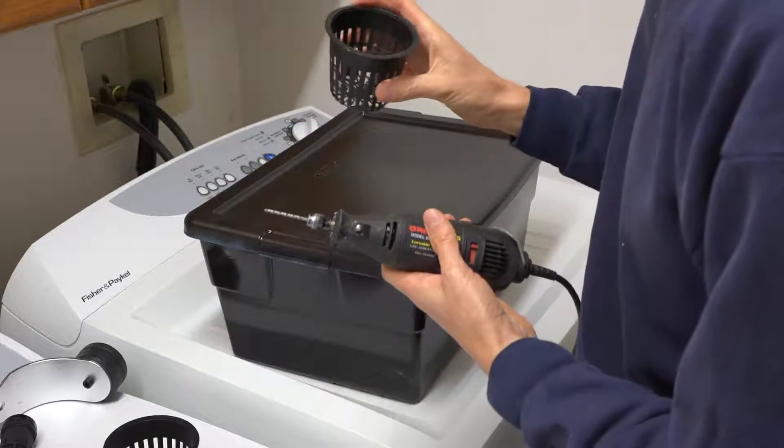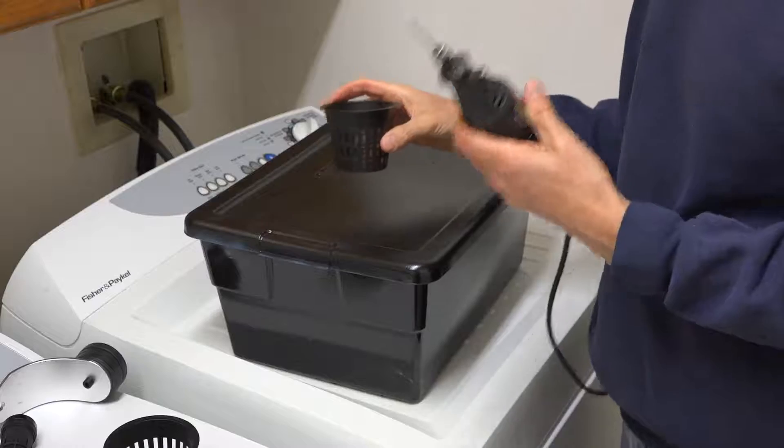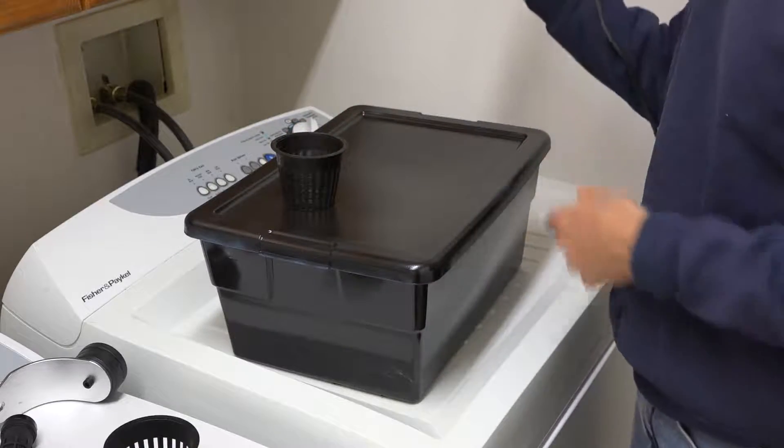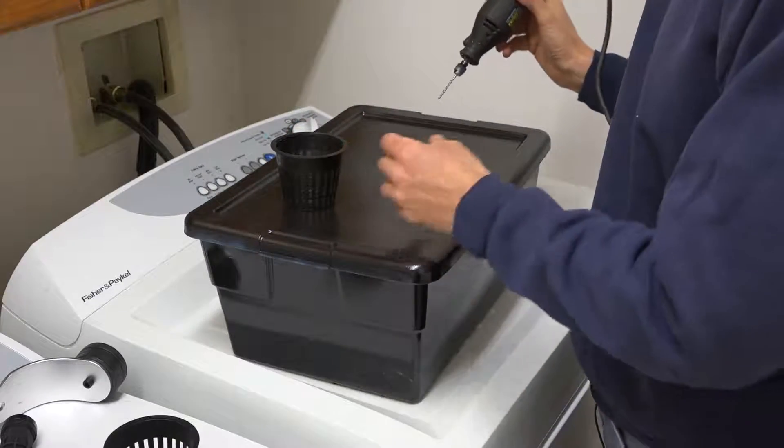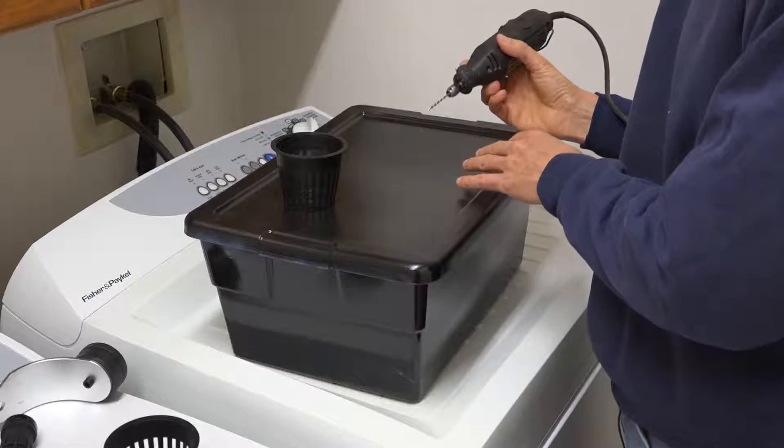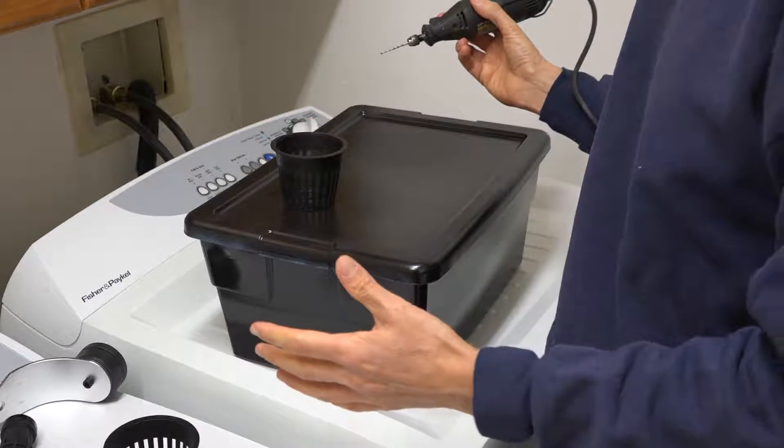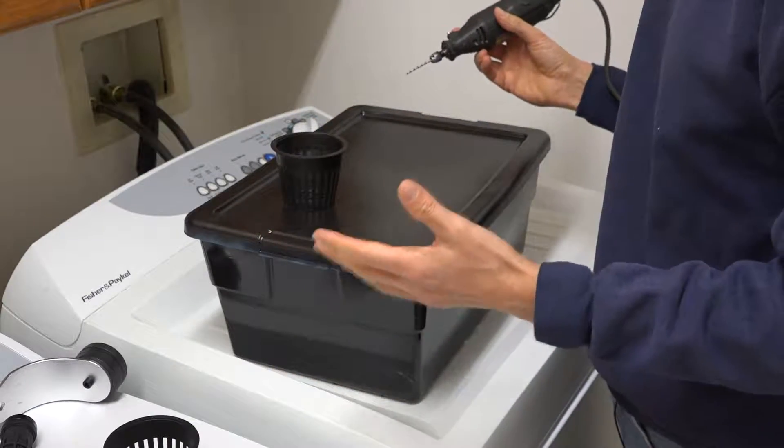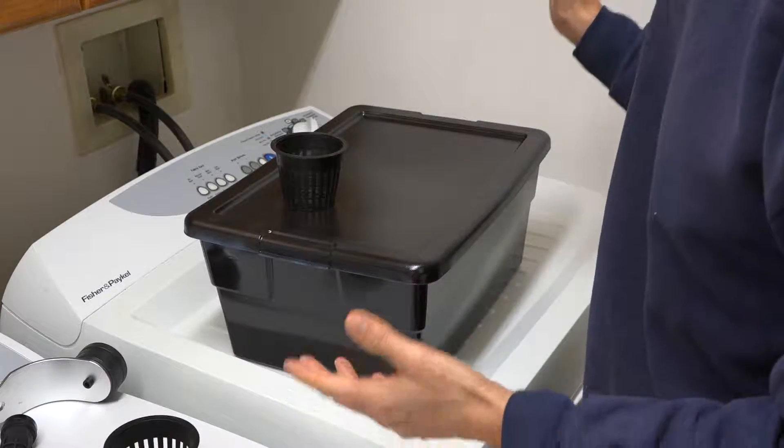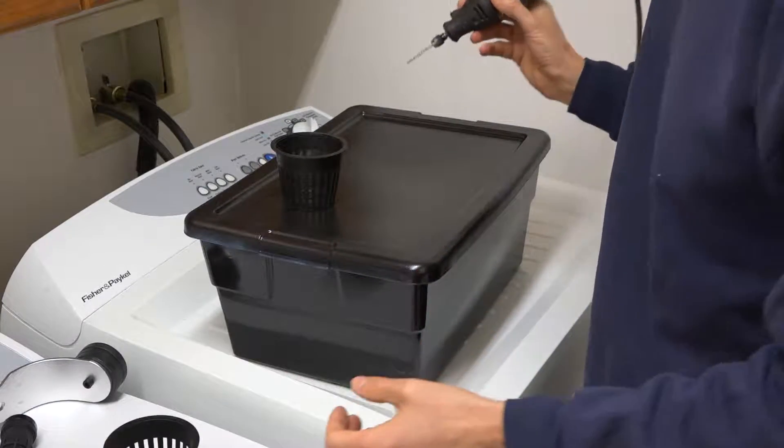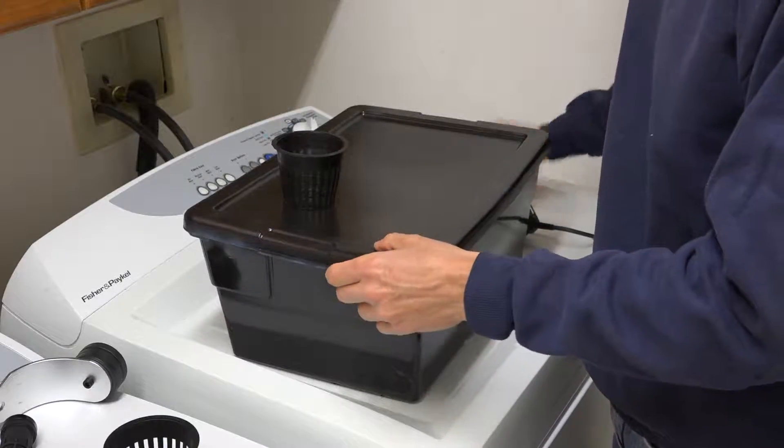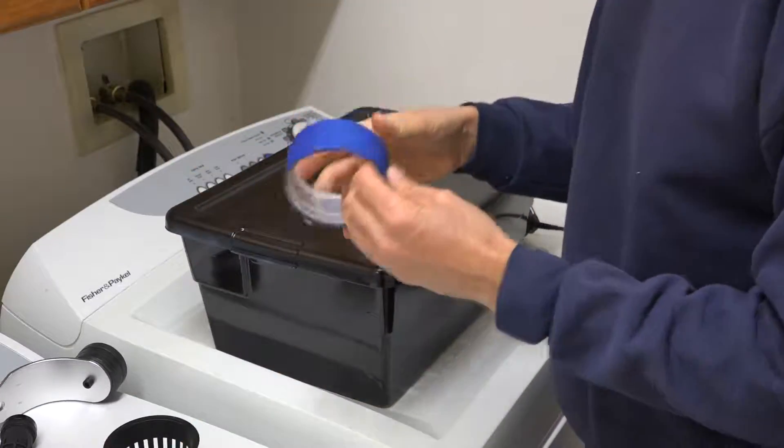And I also found that when you use a Dremel on this bad boy, little tiny pieces of plastic go flying all over the place. And it makes a gigantic mess because they're all static electricity and they cling to everything and it's awful. So what you do to stop that from happening is you use tape.